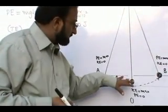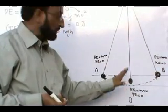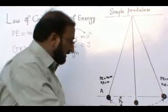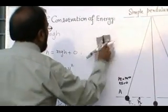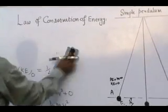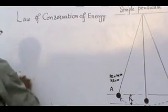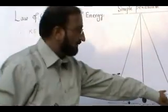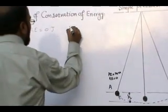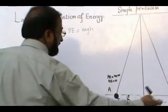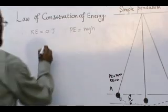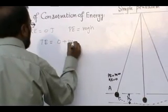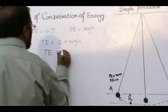Due to inertia, this bob cannot stop at this position, so it will move towards position B. At position B, its velocity will be zero while its height is maximum. So at position B, kinetic energy is zero because velocity is zero. Potential energy is equal to mgh because maximum height is reached by the bob. So total energy at point B is equal to zero plus mgh, that is equal to mgh.